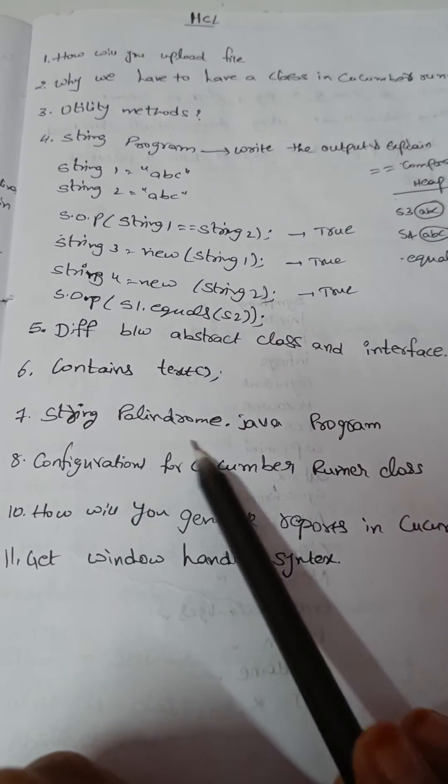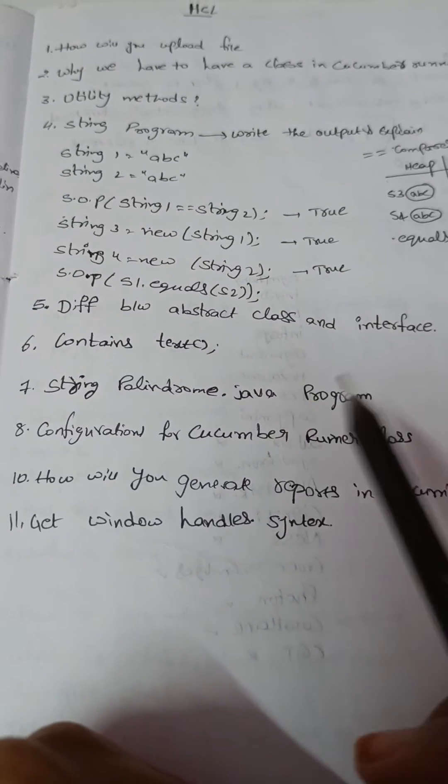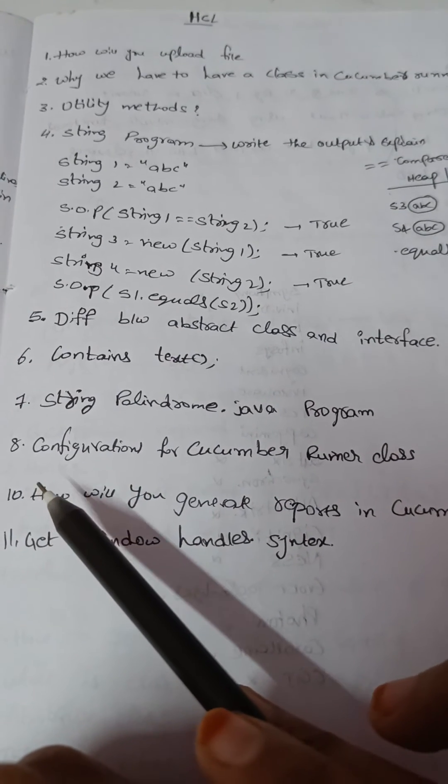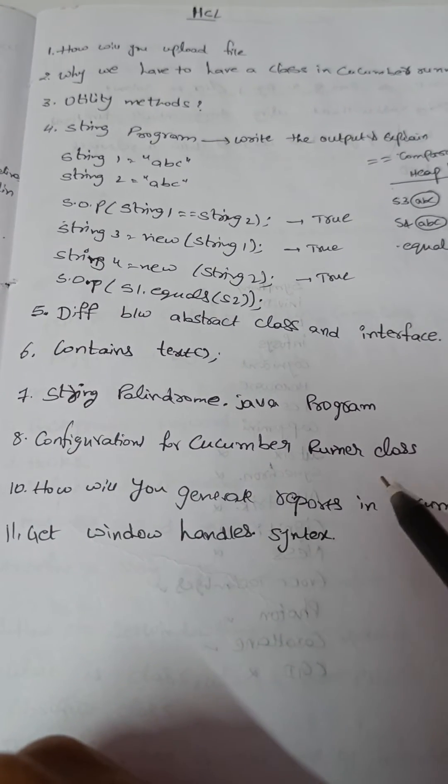And seventh question is string palindrome java program. So I have been asked this question like write a program on string for string palindrome. And also eighth question is like configuration for Cucumber runner class.